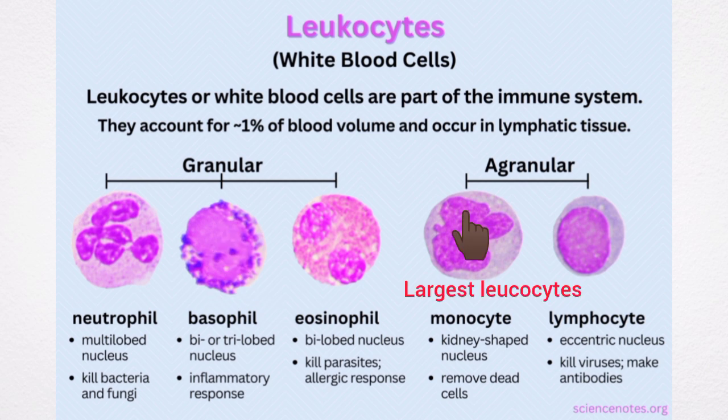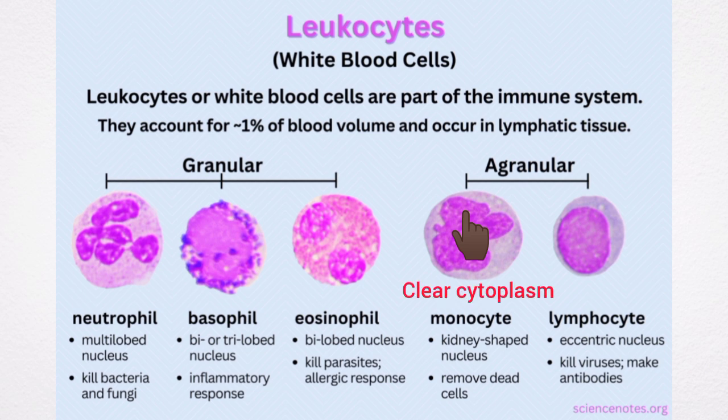Monocytes are the largest leukocytes with a diameter of 14 to 18 microns. The cytoplasm is clear without granules. The nucleus is round, oval, and horseshoe-shaped in nature. The nucleus is placed either in the center of the cell or pushed to one side, and a large amount of cytoplasm is seen.